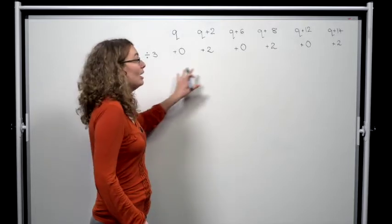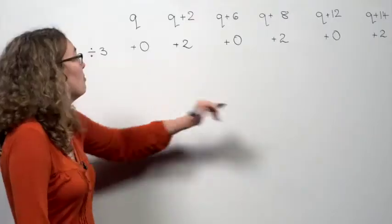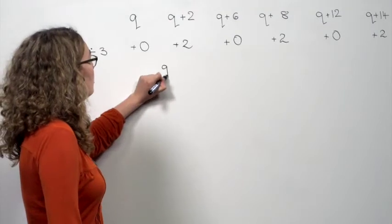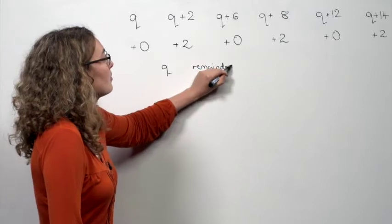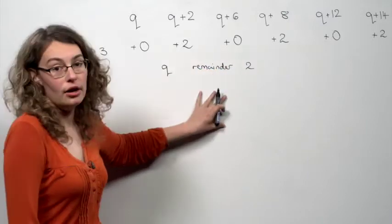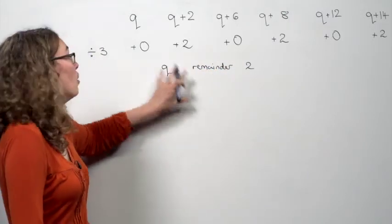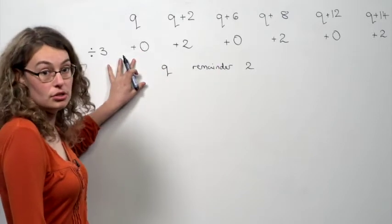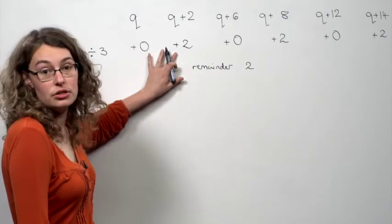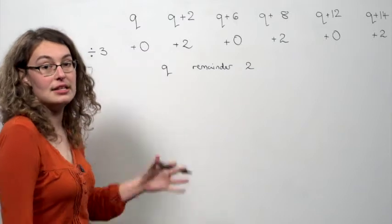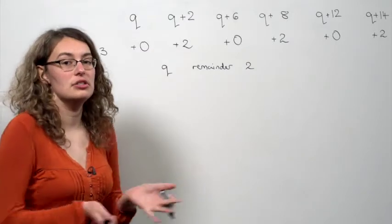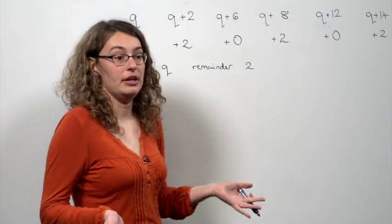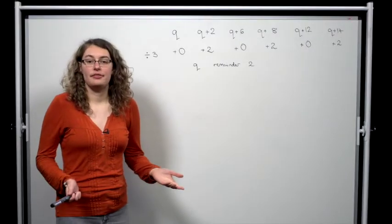That means we haven't solved the problem yet, because if q has remainder 2, then we are only going to get remainders of 2 plus 0 is 2, and 2 plus 2 is 1. That is, nothing will give us remainder 0, so we aren't allowed to deduce that anything is a multiple of 3. So, that was divisibility by 3. Now, let's look at divisibility by 5.